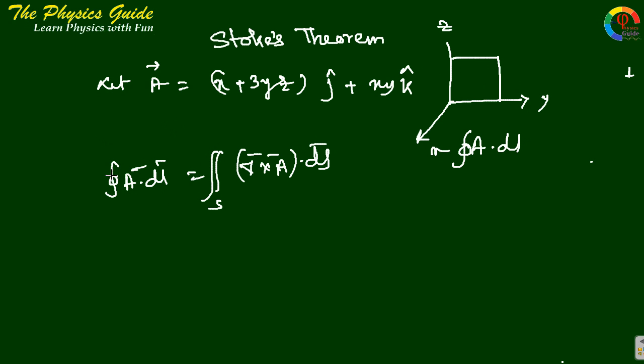That's it, del cross A means now del cross A equals to, we know i j k, del x, del y, del z. And there is no i component so this is 0, this gives ax plus 3yz, and this is axy.